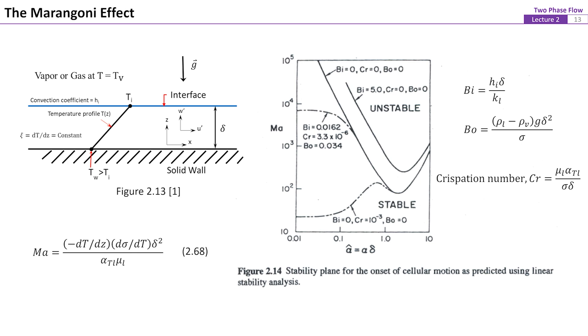Sigma is the surface tension, alpha TL is the thermal diffusivity of the fluid, and mu L is the viscosity of the liquid. Note that dt dz is negative in this case, so the value for the Marangoni number is positive.